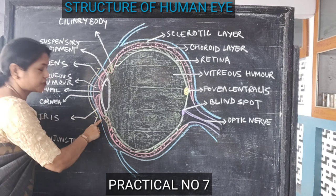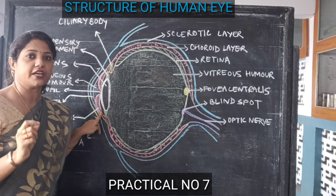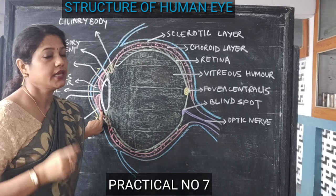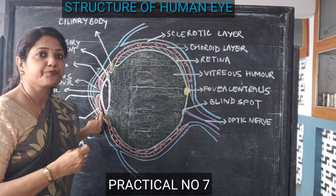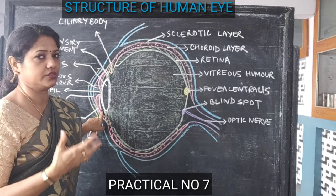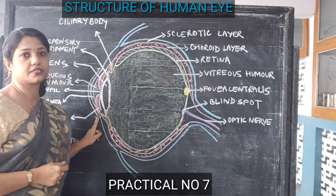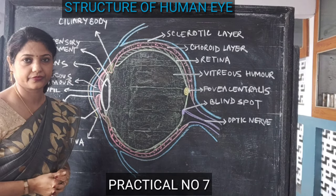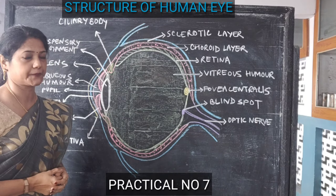Sometimes, due to some effect, this cornea becomes opaque. Then this part of the eye can be operated upon. And if any person donates their healthy cornea, then it can be transplanted in place of the defective one. So this is the outermost part of the eye.